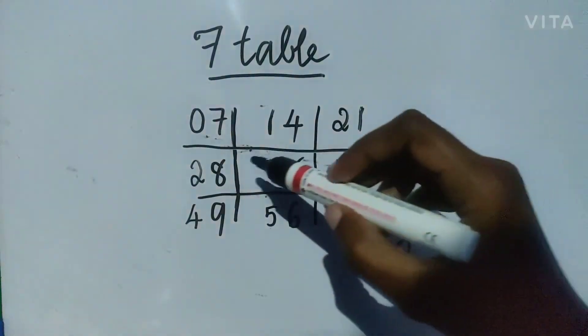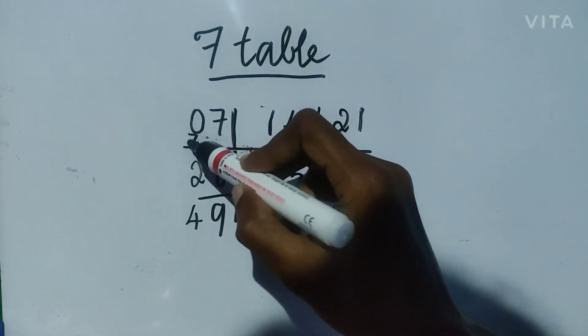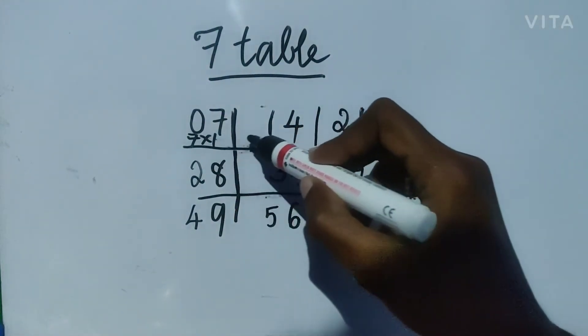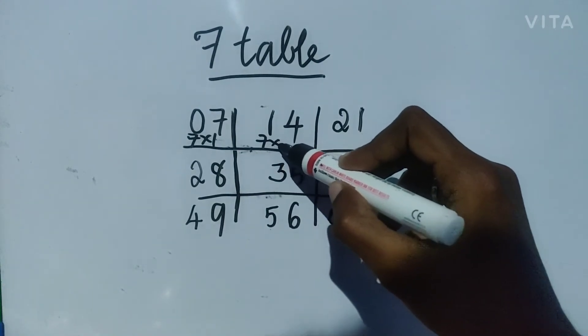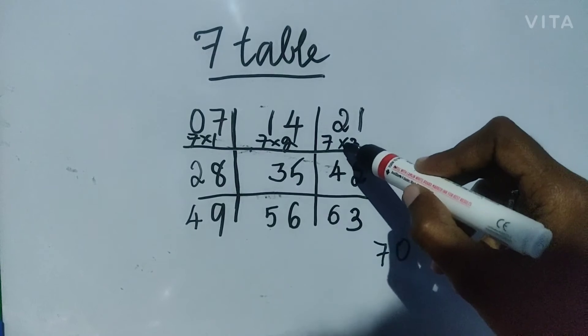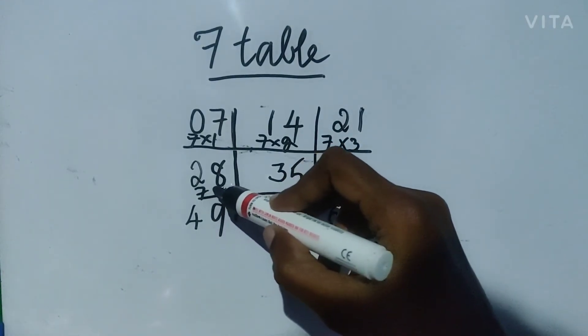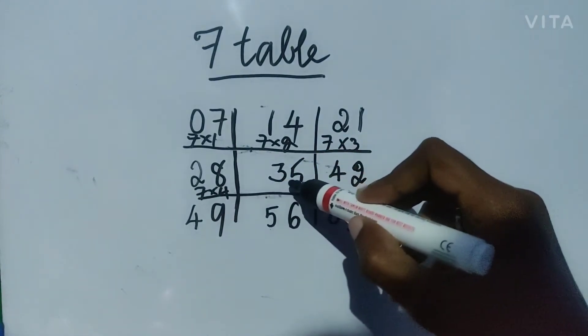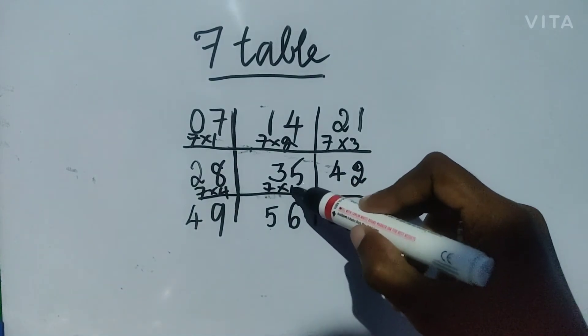So now this is 7 table. 7 ones are 7, 7 twos are 14, 7 threes are 21, 7 fours are 28, 7 fives are 35.